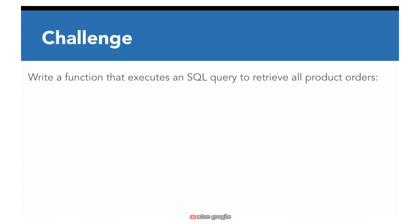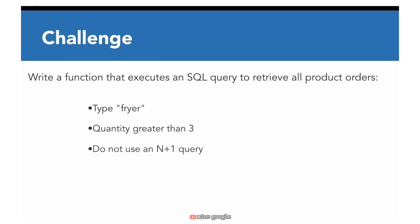Here's a challenge to practice your skills at writing SQL queries using Python. Write a function that executes a SQL query retrieving all product orders, passing in the product type 'fryer' instead of 'oven'. Also, the query should return only product orders where the order quantity is greater than three. Don't use an N+1 query. You can specify three directly in the SQL string for that condition.